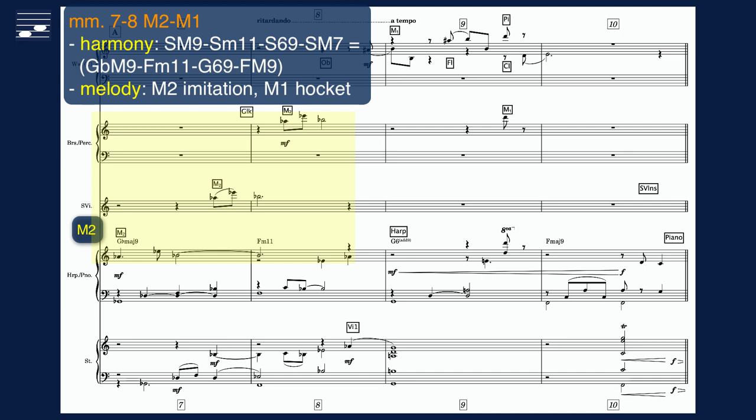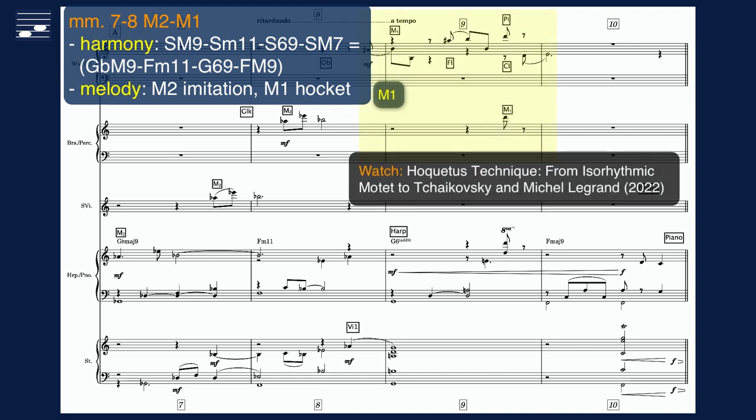M2 is played by piano. The melodic technique is imitation in solo violin and glockenspiel. The next M1 statement is presented as a hocket technique for woodwinds. I recently uploaded a video dedicated to this subject. Listen to the audio rendering of the M2 phrase.